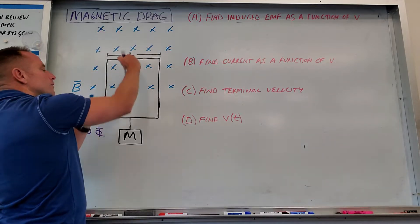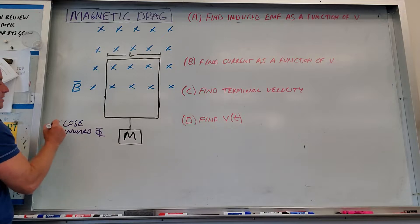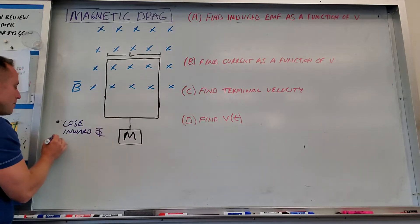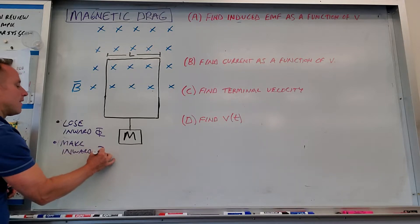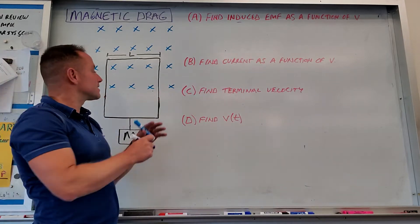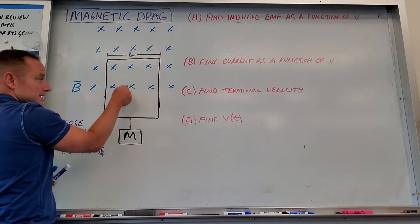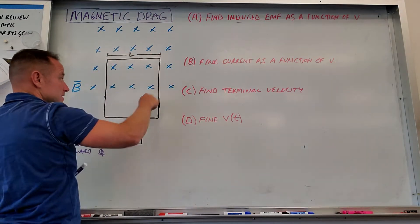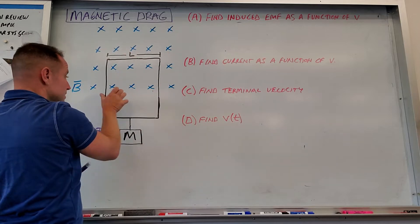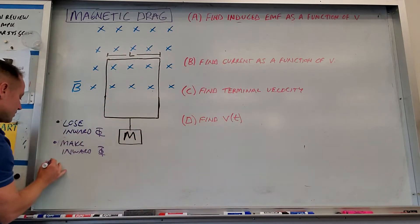So since we're losing inward flux, the system is going to try to fight that change in flux by generating its own inward flux. So we need to make inward flux. And the way to make inward flux in the system, we want a field that points into the board here. And so what's going to have to happen then is the system will run its own current clockwise. So we're going to get a clockwise current.